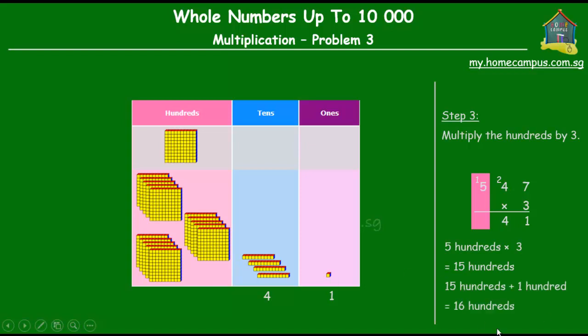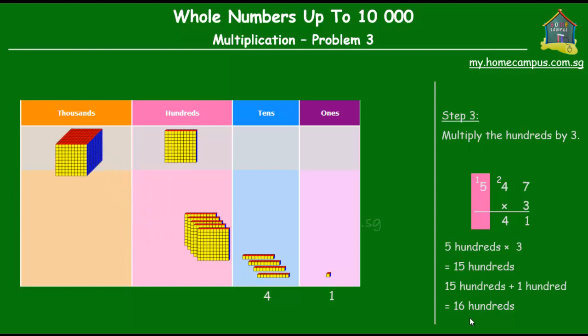16 hundreds again need to be regrouped and this time we regroup 10 hundreds to form 1000, and we are left with 6 hundreds. So we have 6 hundreds and we have 1000. So let's go back to the working here. 5 hundreds times 3 is 15 hundreds plus 1 hundred is 16 hundreds.